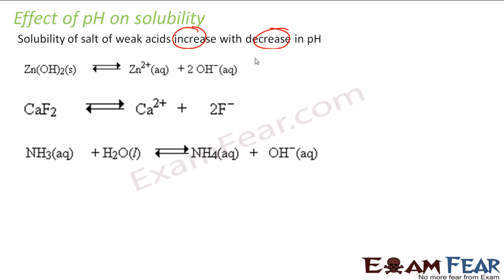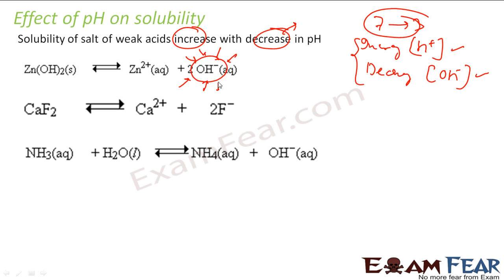Decreasing the pH means I am increasing H+ ion concentration or decreasing OH- ion concentration. In this case, if I increase H+ ion concentration, OH- ion will be consumed. That means I am decreasing the concentration of this. Since I am decreasing the concentration of OH-, the stress will be relieved if the equilibrium moves in this direction. That means more and more of this will dissolve.